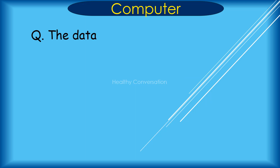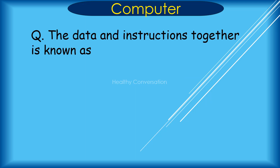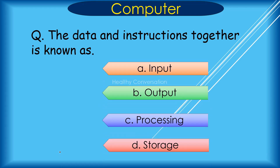Question: The data and instructions together is known as A. Input, B. Output, C. Processing, D. Storage. Correct answer is A. Input.